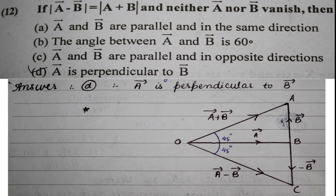Next question: if |a − b| equals |a + b| and neither a nor b vanishes, then what can we conclude? The figure clearly shows that a must be perpendicular to b. So option D is the correct answer.